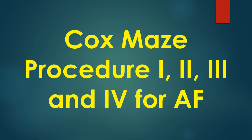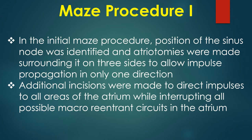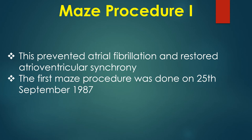Surgical procedures for atrial fibrillation are called Cox-Maze procedures in recognition of the pioneering work done by Cox and his colleagues. Initial work from this group was left atrial isolation; though this produced sinus rhythm in the right atrium, the left atrium continued to fibrillate and was a source for thromboembolism. In the initial Maze procedure, the position of the sinus node was identified and atriotomies were made surrounding it on three sides to allow impulse propagation in only one direction. Additional incisions were made to direct impulses to all areas of the atrium while interrupting all possible macro-reentrant circuits.